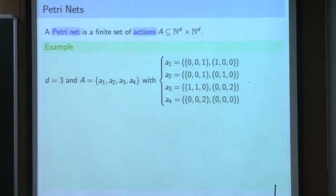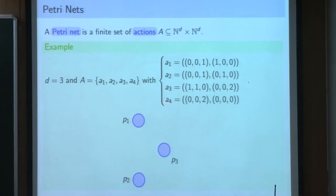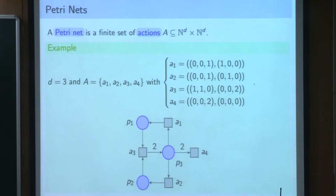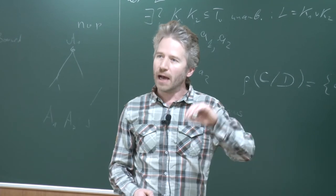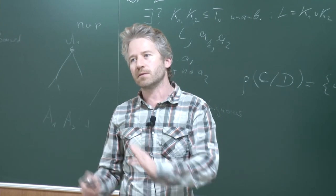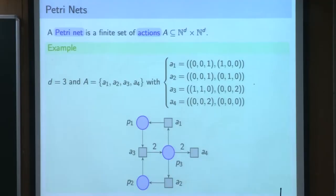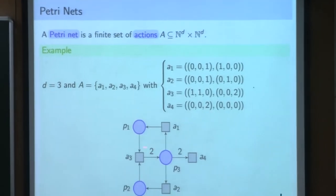Assume that you have a Petri Net where the dimension is three and you have four actions given this way. Then you can draw a picture of that Petri Net that will be a bi-partite graph. You will have some nodes between one and the dimension - in our case three nodes labeled P1, P2, and P3. Those nodes are called places. You also have nodes corresponding to the actions: A1, A2, A3, and A4. Those values correspond to input edges from places to actions and output edges from actions to places. Since I have a 2 over there, I will put a 2 at that position and so on.